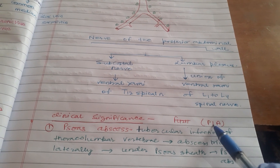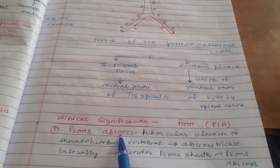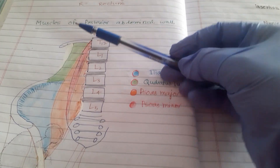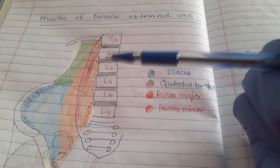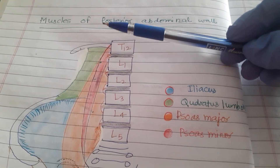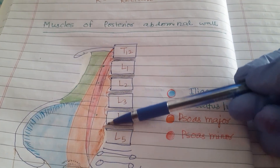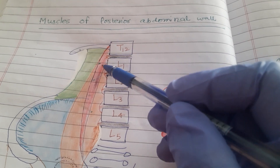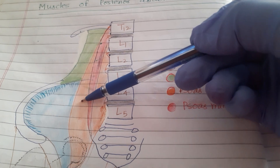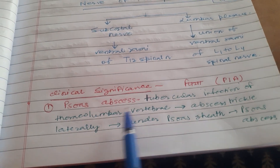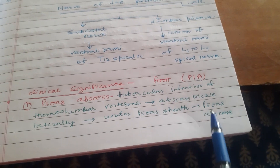Clinical significance — first, psoas abscess. The psoas major muscle has a fascial sheath (psoas fascia) overlying it. When there is tubercular infection of the thoracolumbar vertebrae, caseous necrosis trickles down laterally — it cannot progress anteriorly due to the anterior longitudinal ligament — so the pus comes out behind the psoas fascia. This is known as psoas abscess, caused by tubercular infection of the thoracolumbar vertebrae.